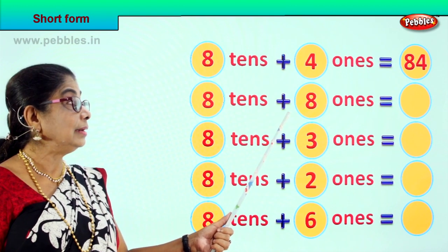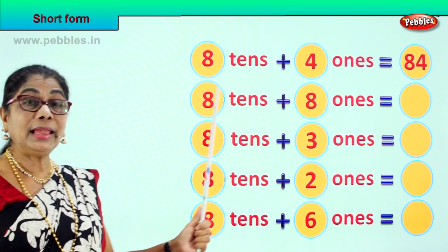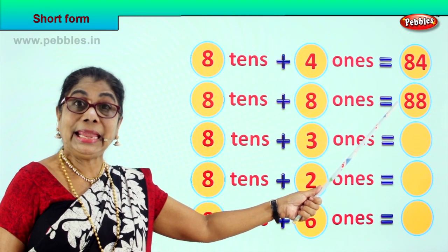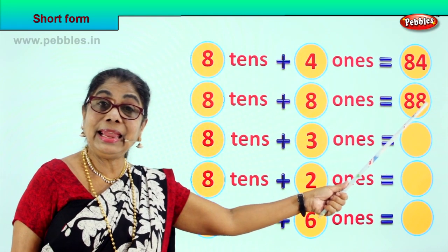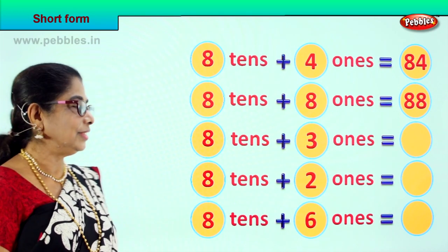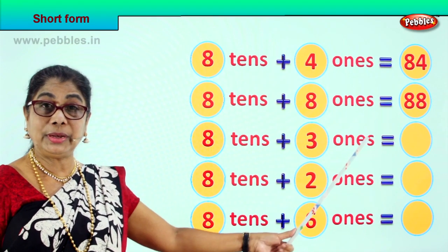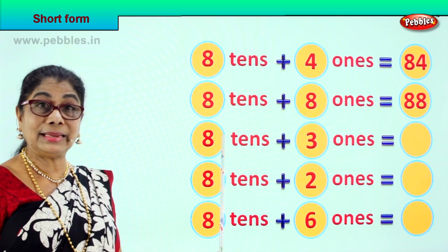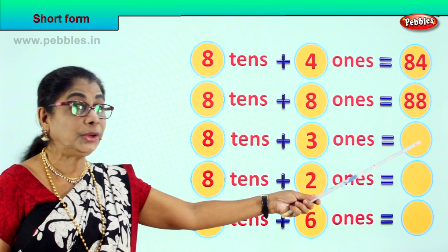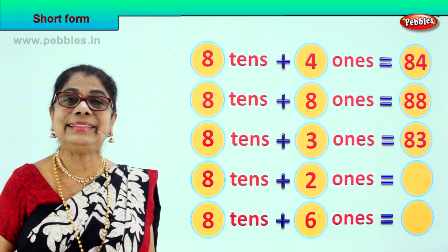8 tenths plus 8 ones. What is 8 tenths plus 8 ones? 80 plus 8? 8 tenths plus 8 ones is equal to? 80 plus 8? 88. 8 and 8? 88. 8 tenths plus 3 ones is equal to? 80 plus 3 is? Eight and three, eighty three.